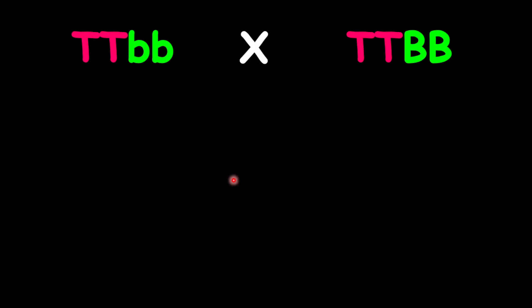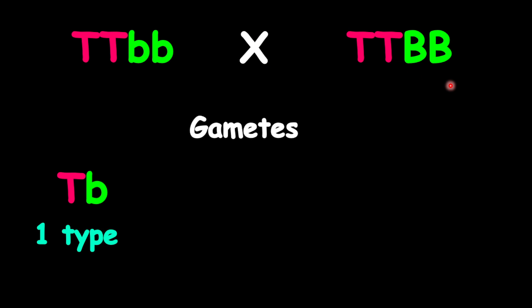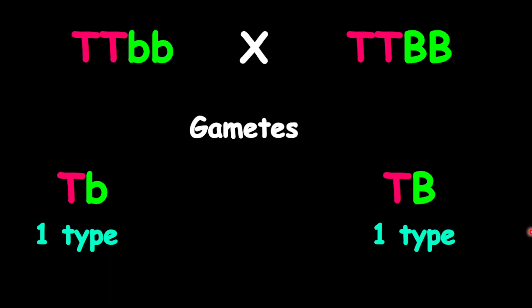For the next example, one parent is homozygous dominant for one trait and homozygous recessive for the other trait, while the second parent is homozygous dominant for both traits. So our gametes: in the first parent, it's only uppercase T with lowercase B. And for the second parent, it's only uppercase T with uppercase B. So for the first parent we only have one possible type of gamete, and for the second parent we only have one possible type of gamete.